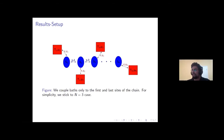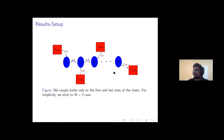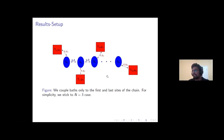Now that we've taken a look at the equations being studied, let me describe the general setup. We have a spin chain coupled to multiple baths. For simplicity, all the plots in this presentation will use the N equals three case — so there are only three spins — and the first and last spins are connected to baths which may be either in equilibrium or in non-equilibrium.